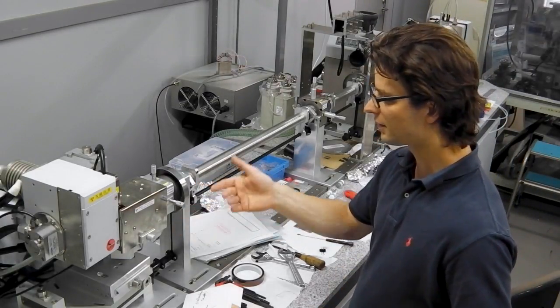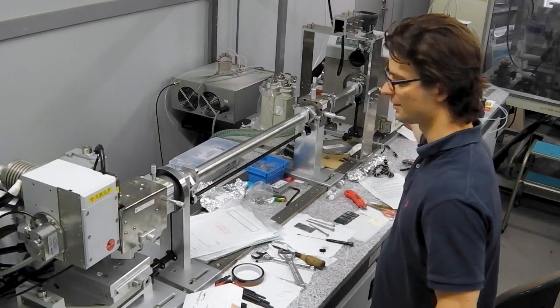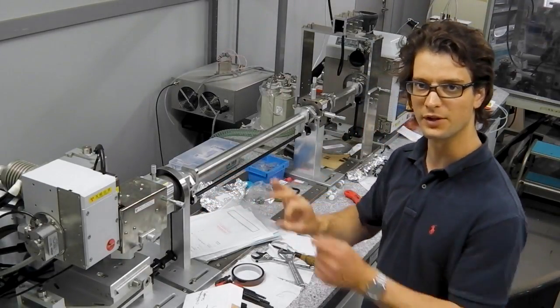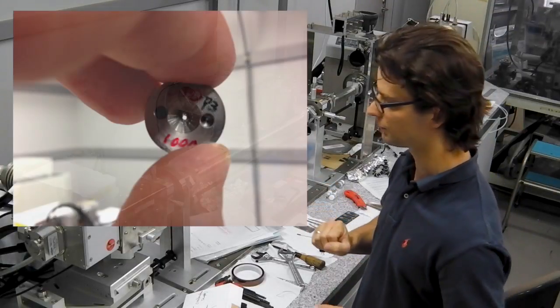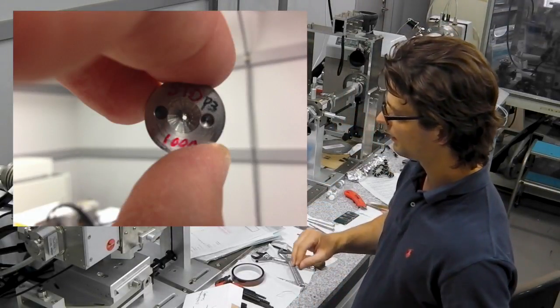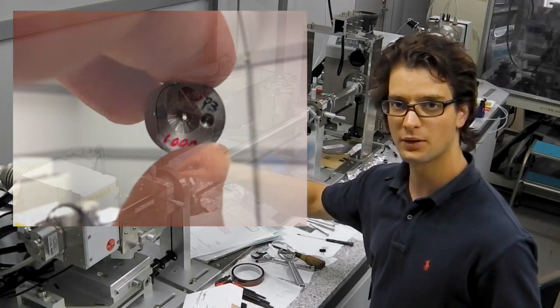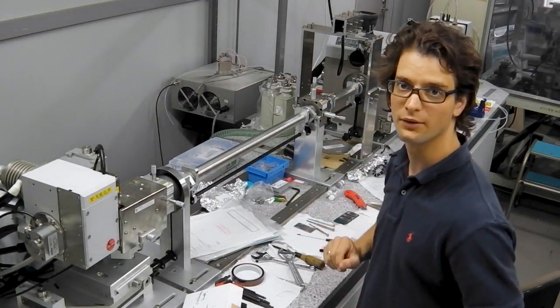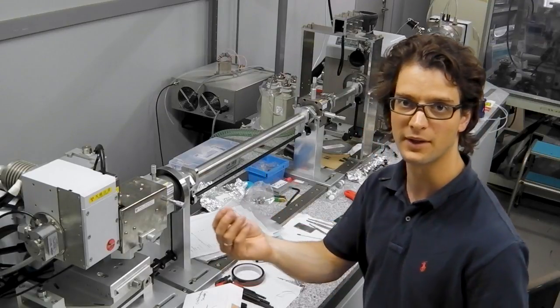After the optics comes the collimation system. This collimation system consists of pinholes, which are small plates with a hole drilled through them. You insert the pinholes manually over here. So if you want to change the size of the X-ray beam, you need to manually change the pinholes.